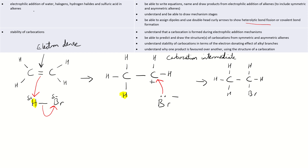This is electrophilic addition. An electrophile is an electron pair acceptor, so HBr is our electrophile. We've looked at the symmetric case and can do the mechanism stages. Your marks are awarded for the curly arrows in red, for drawing the correct carbocation intermediate, for assigning dipoles — the delta positive and delta negative — and for using the double-headed curly arrows.